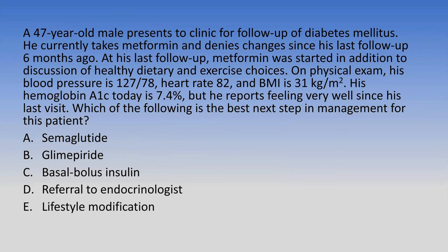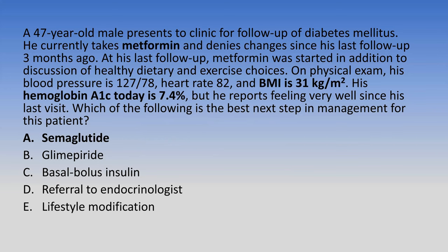A 47-year-old male presents for diabetes follow-up. He takes metformin and denies changes since his last visit six months ago, when metformin was started along with dietary and exercise counseling. His BP is 127/78, HR 82, BMI 31, and his hemoglobin A1c is 7.4 today. He reports feeling well. Which is the best next step: semaglutide, glimepiride, basal-bolus insulin, referral to endocrinology, or lifestyle modification?